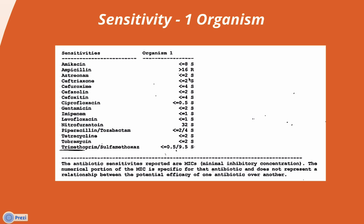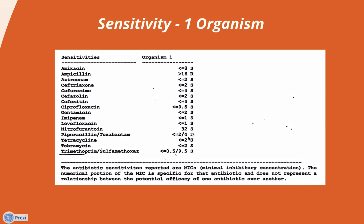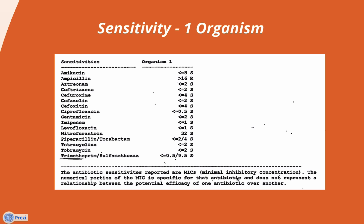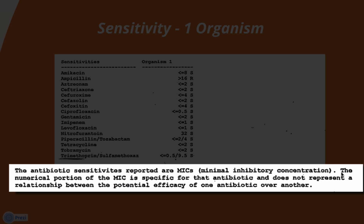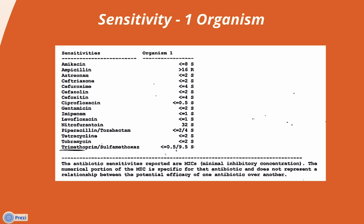So what do these numbers mean? That's a very common question that comes up. If you look at the bottom here, you'll notice there's a very important sentence. The numerical portion of the MIC — the minimal inhibitory concentration — is specific for that antibiotic and does not represent a relationship between the potential efficacy of one antibiotic over another. What this means is that these numbers don't tell you anything about selecting one antibiotic over another. An 8 is not greater than or less than a 16 in terms of sensitivity or efficacy.